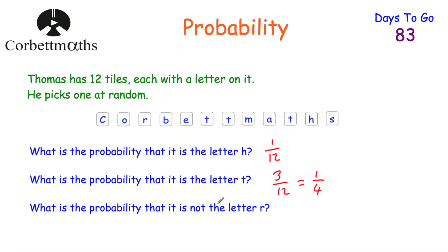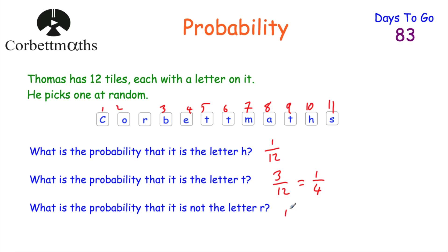What's the probability that it's not the letter R? There's one letter R, so 11 of them are not R. The probability of picking not R is 11 out of 12, or eleven twelfths.